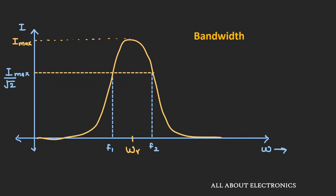Now let's see about the bandwidth. The bandwidth is defined as the difference between the –3 dB frequencies in the given circuit, or equivalently as the difference between the half-power frequencies. The half-power frequency is the frequency at which the power of the circuit is reduced to half, or in terms of current, the value of current is reduced to 1/√2 of the maximum value. F1 is known as the lower cutoff frequency and F2 is known as the upper cutoff frequency. The difference F2 − F1 defines the bandwidth, or in terms of angular frequency, ω2 − ω1 defines the bandwidth of the circuit. For good selectivity, the bandwidth should be as narrow as possible. We will also derive this bandwidth in terms of R, L, and C.